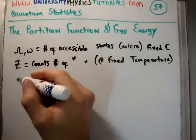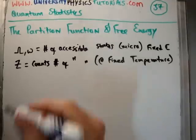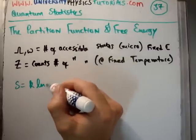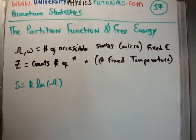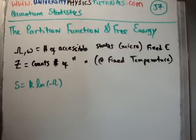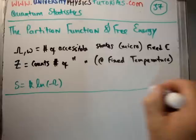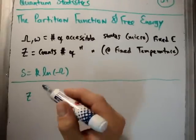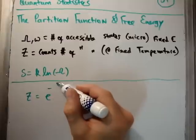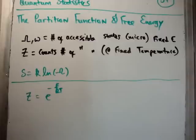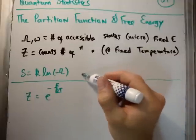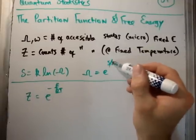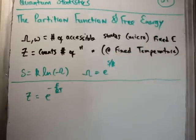Remember that we could use the multiplicity to get entropy. We said that entropy is equal to k times the natural logarithm of the multiplicity. So the question I ask is: is there an analogous quantity using the partition function? Now, it's quite counter-intuitive physics as far as I'm concerned. But we can suggest — and I'll show you why in a moment — that Z is equal to e to the minus F over kT, where F is the Helmholtz free energy. So there is in fact an analogous function: here we have e to the S over k.